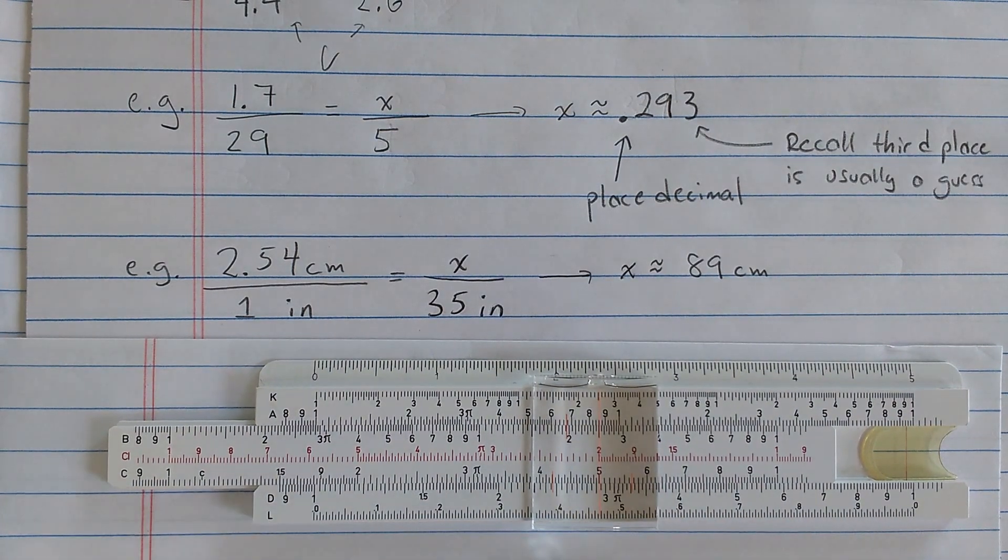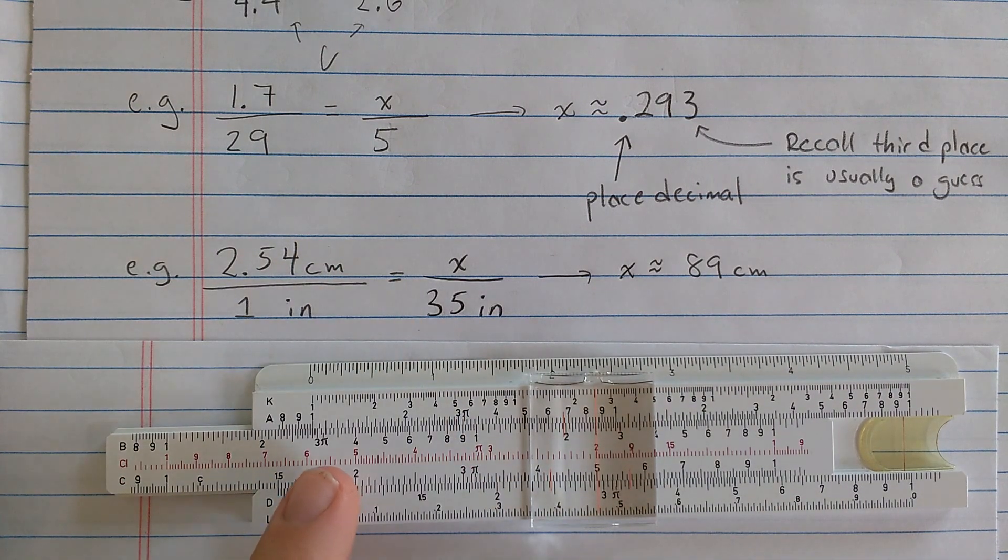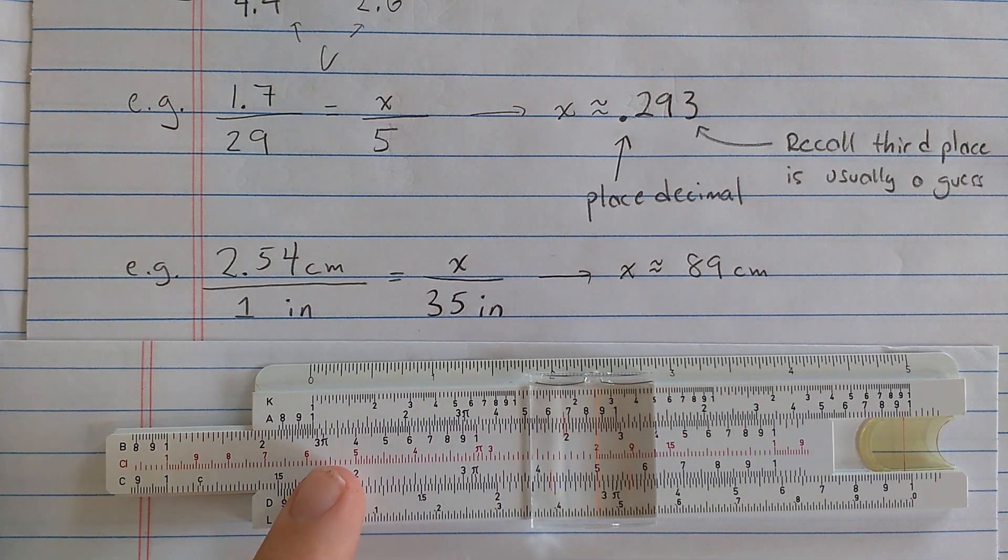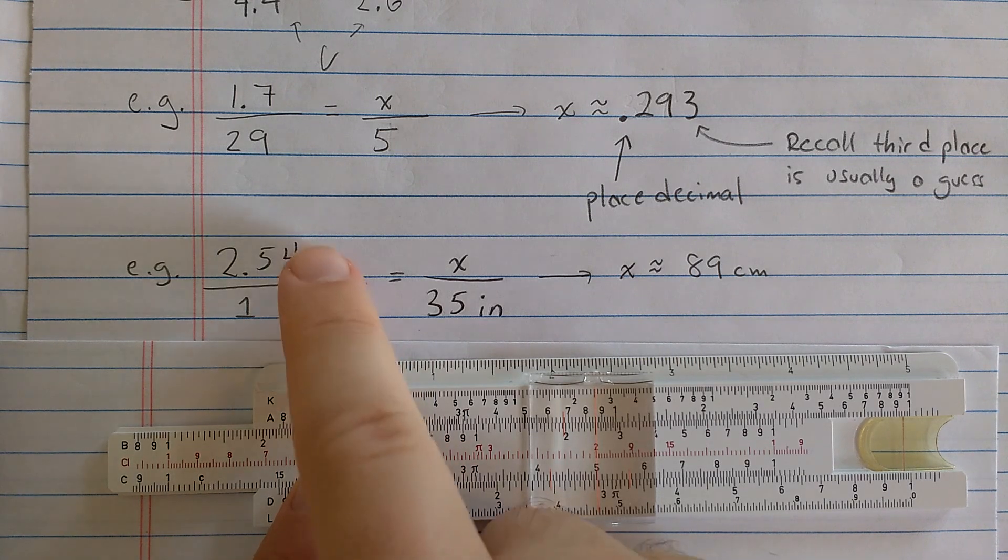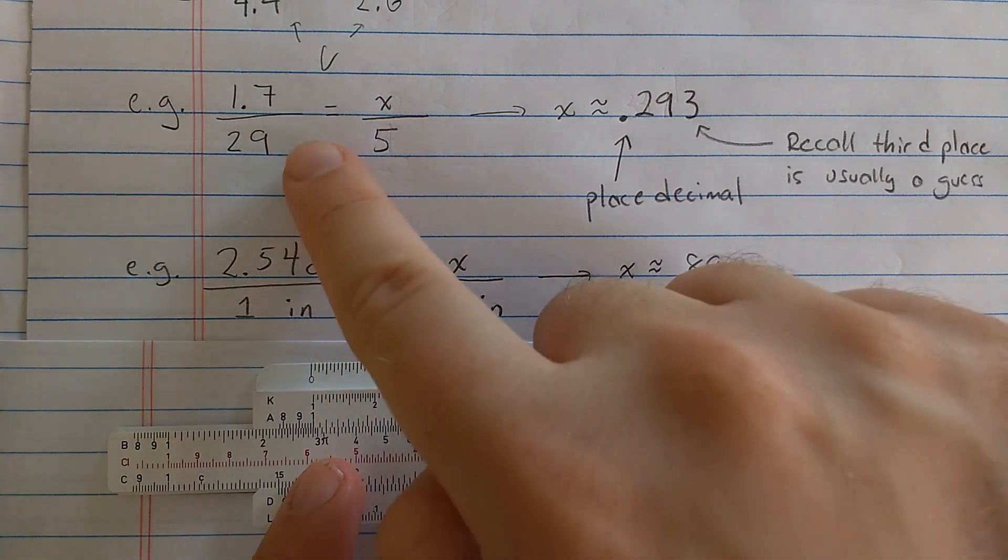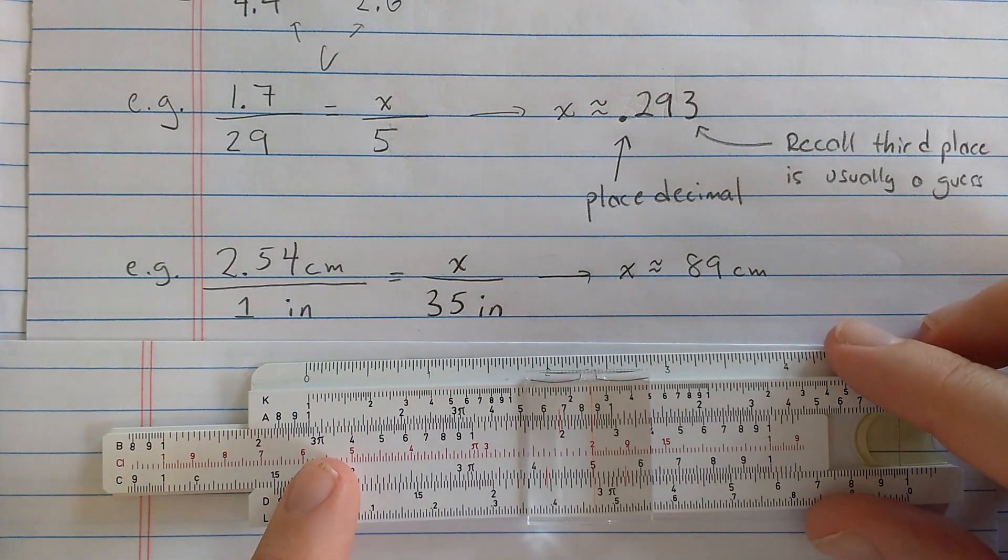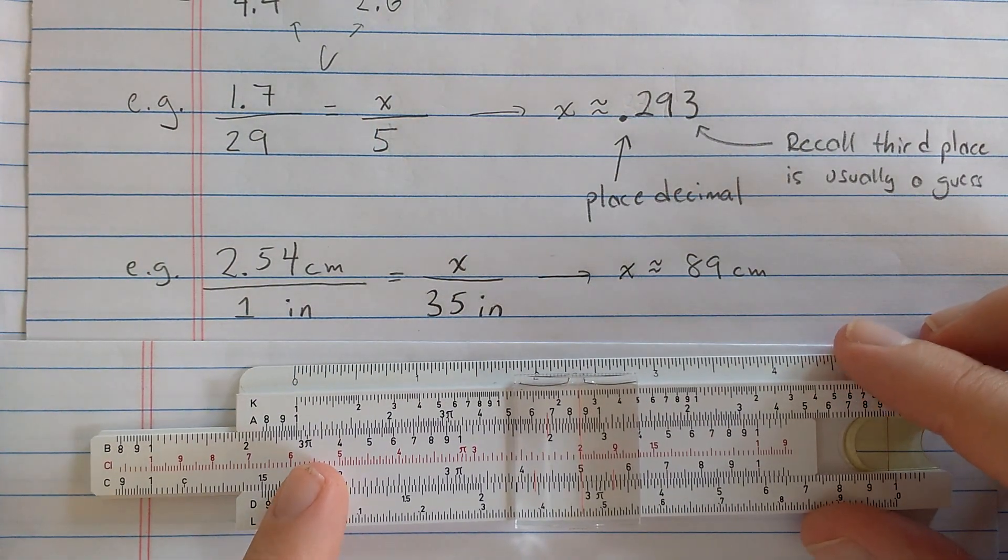Now, one way, the thing this is useful for is conversion. So say you know some conversion factor. Here, this is a common conversion factor that we probably know. 2.54 centimeters is an inch. But it's not necessary that one of these is a 1 using this technique, right, because it could be 1.7 to 29 of something. But this is a common one that we know, so I'll just use the same technique.